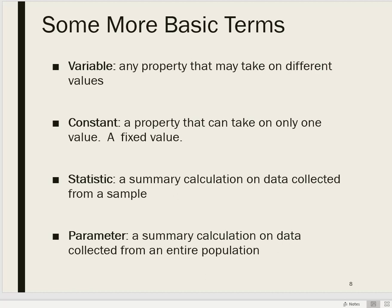A statistic is a summary calculation or summarization of data based on a sample. Many people call all of the computations in this class statistics; however, more appropriately, statistics go with samples — a sample statistic — whereas a parameter is a summary calculation based on the entire population. For example, if we're calculating a mean, it's a statistic if calculated from the sample, and more appropriately called a parameter if based on the entire population of interest. You can make a distinction between sample statistics and population parameters.